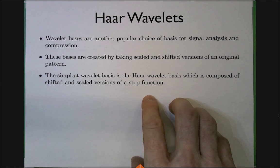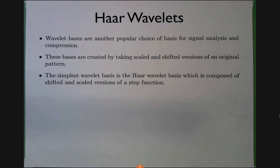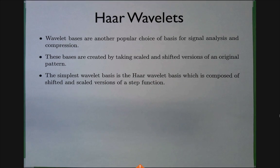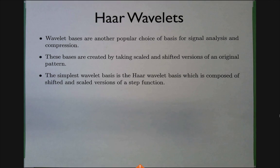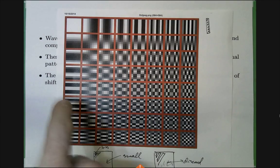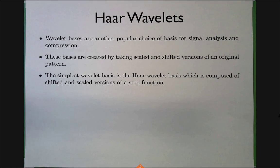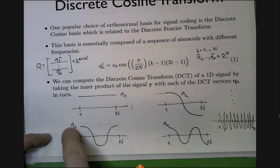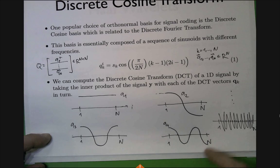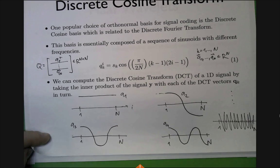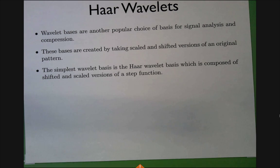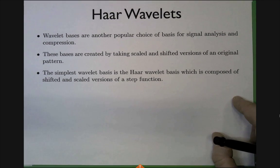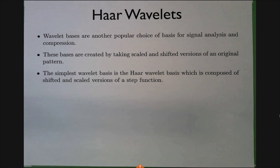Wavelets are essentially a different type of orthogonal basis with the same sort of idea. The difference from the DCT is that wavelets are spatially localized. The DCT basis functions are global — something is going on across the entire interval. Wavelets are different: they localize in the spatial domain as well.